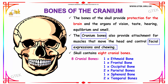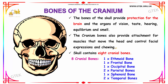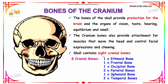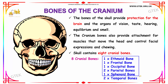The cranium bones are one of the most important bones as they help the human for survival, helping the human eat food properly by chewing. The skull contains eight cranial bones: one ethmoid bone, one frontal bone, one occipital bone, two parietal bones, one sphenoid bone, and two temporal bones. These are the eight cranial bones which make the human skull.